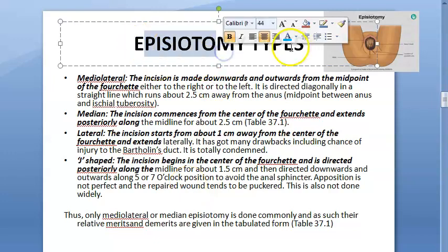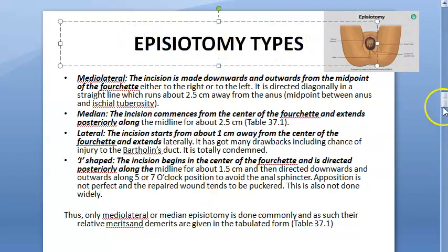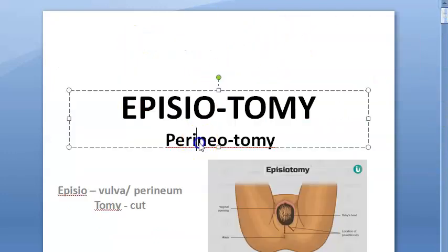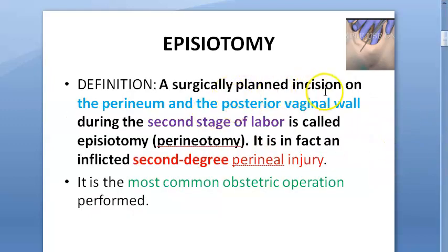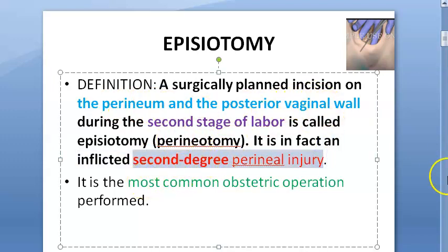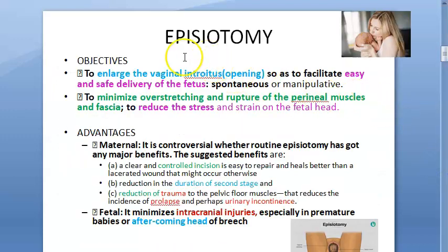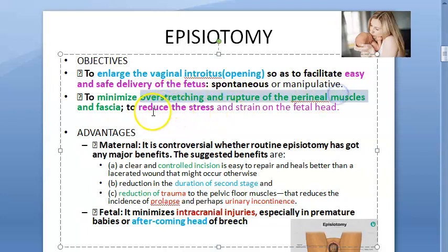Hello everyone. In this video we want to look at the types of episiotomy. Before that, what have we seen so far? We looked at that episiotomy is also called perineotomy. It is a planned surgical incision on the perineum and the posterior vaginal wall in the second stage of labor. It is a second degree injury and the most common obstetric operation. Basically, you want to enlarge the vaginal opening to ensure easy delivery of the fetus, and you don't want to overstretch or rupture the perineal muscles. You also want to reduce the stress on the fetal head.